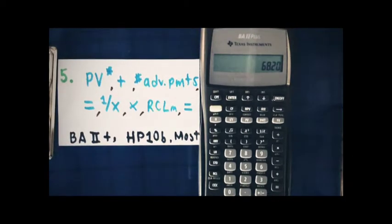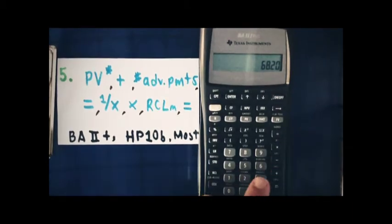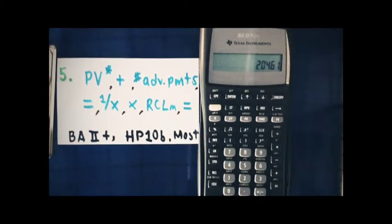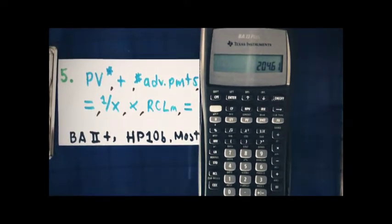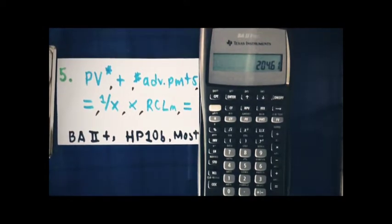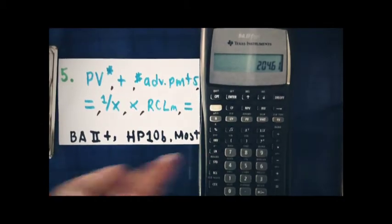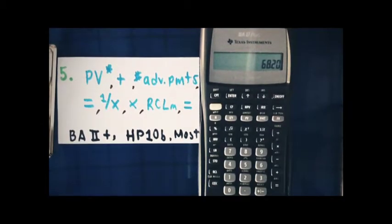For the advanced lease payments at the beginning, you're going to pay $68.28 times 3 months, which is $204.61. So for this particular lease, you're going to pay $204.61 in advance, and each month you're going to pay $68.28.